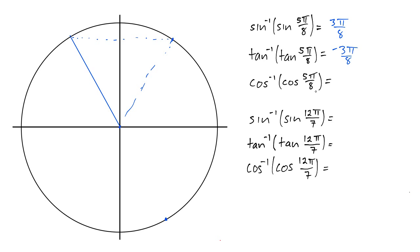What about cosine inverse of cosine of 5π over 8? What do we need to change there? Well, turns out nothing. Unlike sine and tangent inverse, cosine inverse is always going to give us an answer in the first or second quadrant. 5π over 8 is already in the second quadrant, so we don't need to change anything at all.